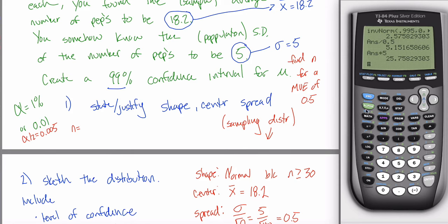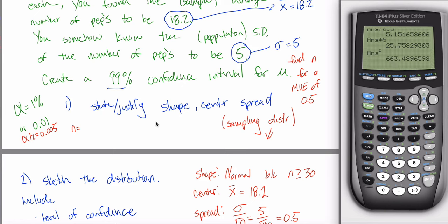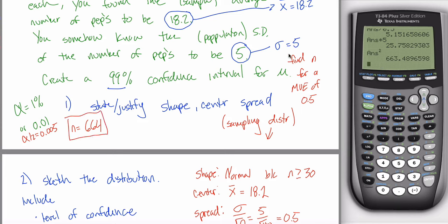Multiply that by sigma — which is given in the problem — then square your answer using the x² key. Hit enter: it gives you 663.48. If you put 663.48, I give you full credit, but technically it's 664 — you always round up to the next whole number in these problems, even though 663.48 would normally round down to 663. So the answer is 664.